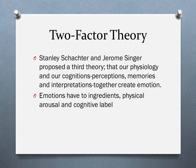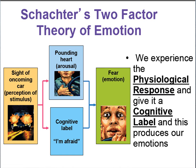The Two-Factor Theory is the third theory you need to know. Stanley Schachter and Jerome Singer proposed that physiological and cognitive perceptions, memories, and interpretations together create emotion. Emotions have two ingredients: the physical arousal and the cognitive label, which together produce the emotion. You see the oncoming car, your heart begins to pound, and then you label it — 'I am afraid, this is fear.' You recognize the pounding as fear, not love.